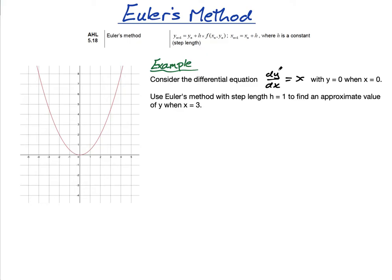So the differential equation I'm using is dy/dx = x. We actually know the solution: it's y = x²/2 + c. They give us the initial condition y = 0 when x = 0, so c = 0, and the solution is y = x²/2. I've drawn the graph of y = x²/2 — this is what I am trying to approximate.